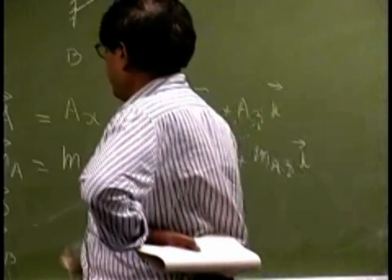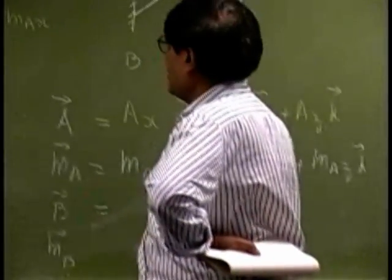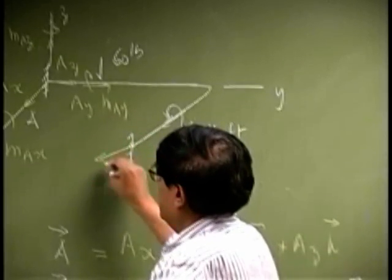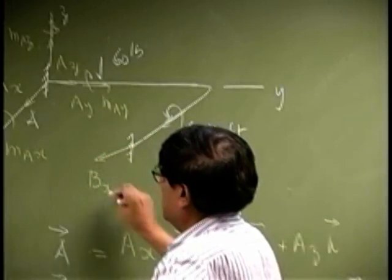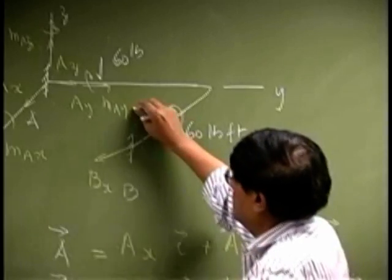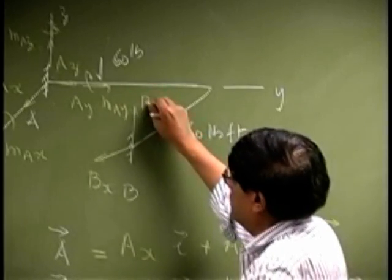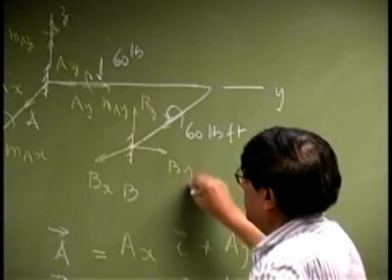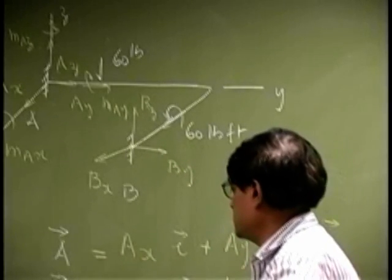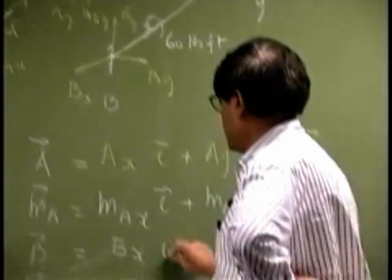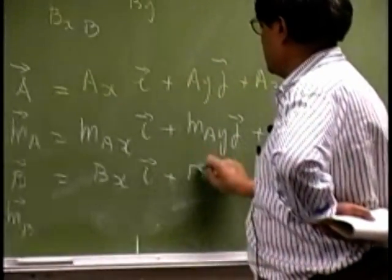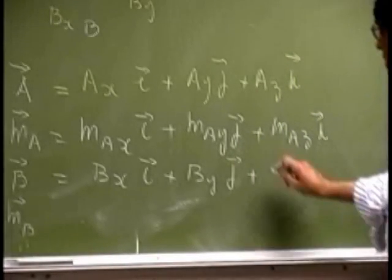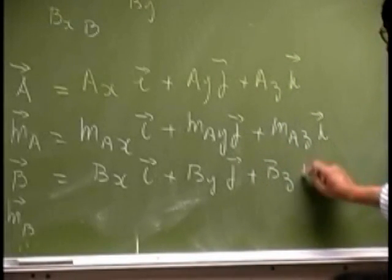Now let us look at point B. Same thing is here. At this point, there will be a component Bx, there is going to be a component Bz, and there is going to be a component By. So this here is Bxi, Byj, and Bzk.